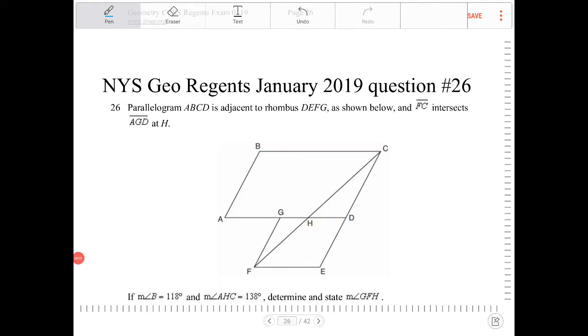Parallelogram ABCD is adjacent to rhombus DEFG. So ABCD is a parallelogram, which means that these sides are going to be parallel to one another.